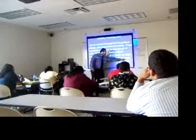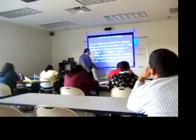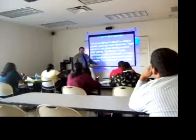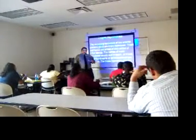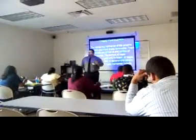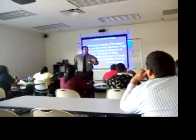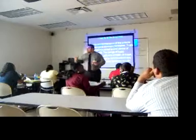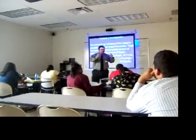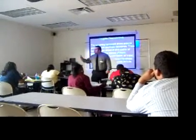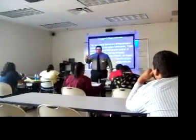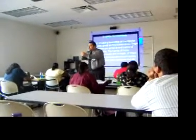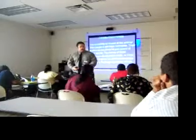We're going to be talking about adrenocorticotropic hormone. What is adrenocorticotropic abbreviated by? ACTH. What is the target gland for adrenocorticotropic? The adrenocortex. Remember, cortex is a Greek word that means bark. Where do you find the bark of a tree? The outside. So anytime there's an outside and a middle portion, the outside is going to be the cortex.